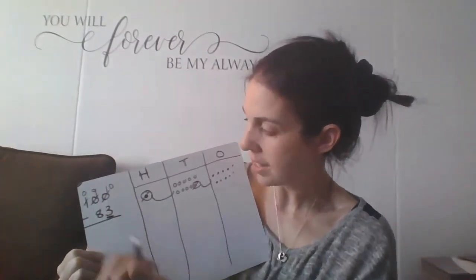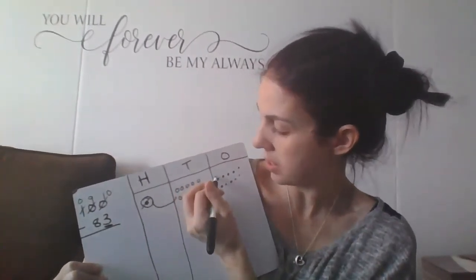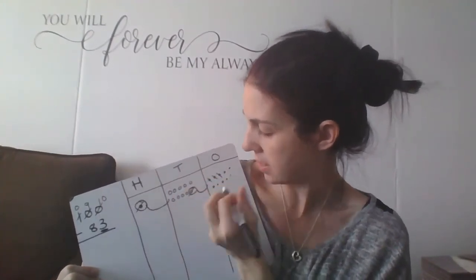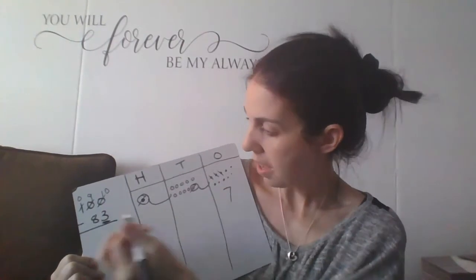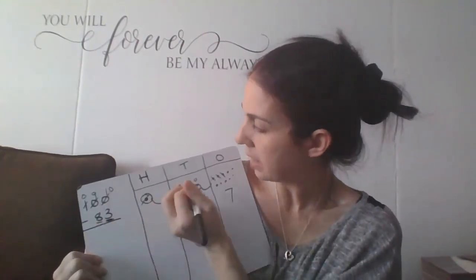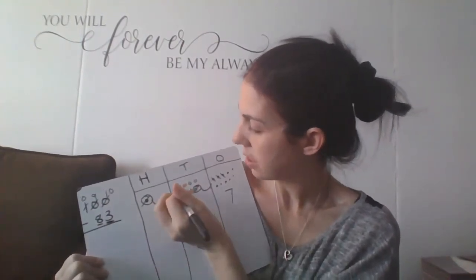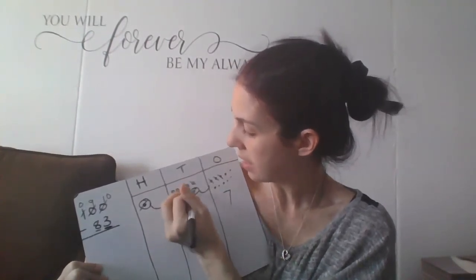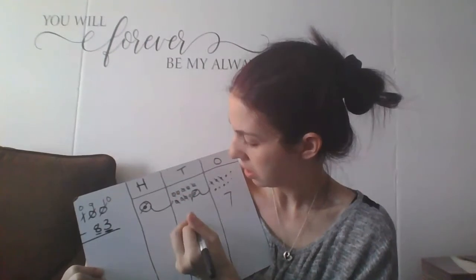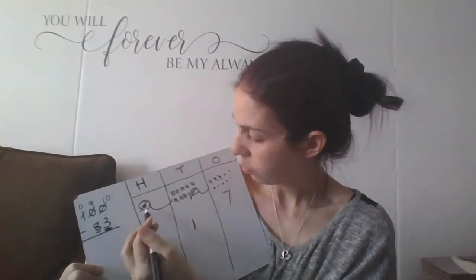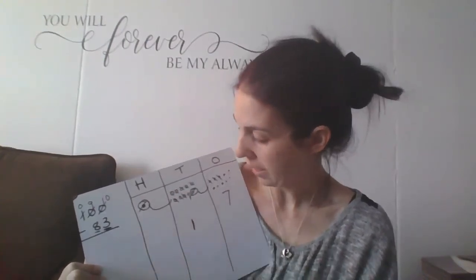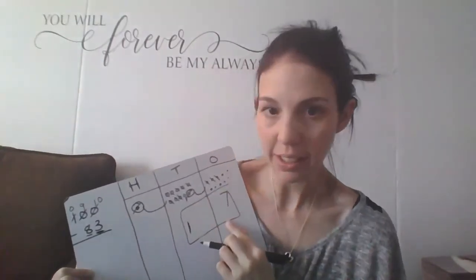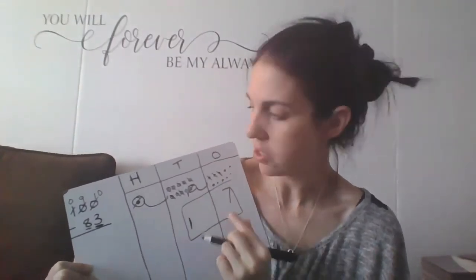Now I'm ready to cross out my 3 ones: 1, 2, 3. How many do I have left? 7. And I'm ready to cross out my 8 tens: 1, 2, 3, 4, 5, 6, 7, 8. I have 1 left. And I have 0 hundreds, so I'm not going to write anything. 17 is my answer.